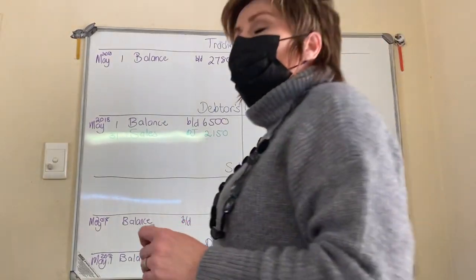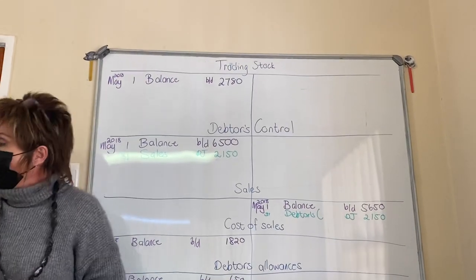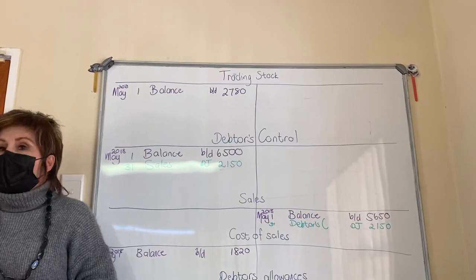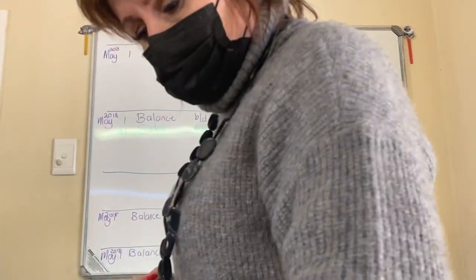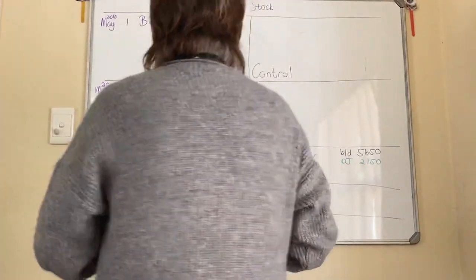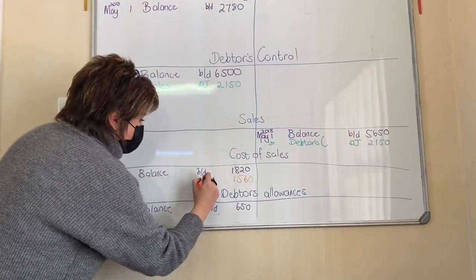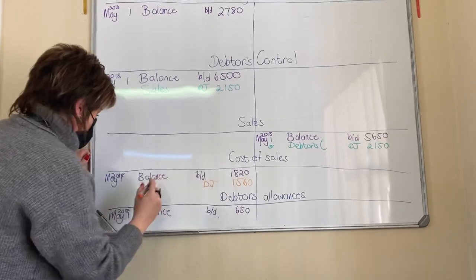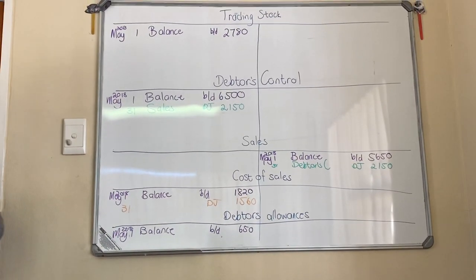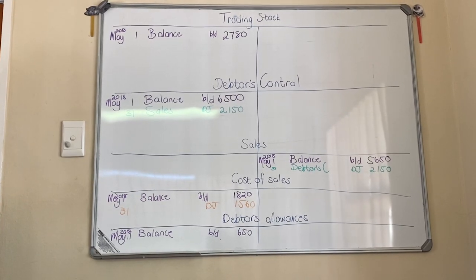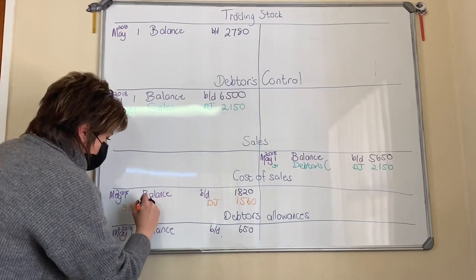Next entry: cost of sales. Cost of sales tells you that my stock has left my store. Cost of sales is an expense — expenses are debits — so it goes to the debit side. This is out of my debtors journal, May the 31st. This tells me my stock has left my store, so my contra account is trading stock.